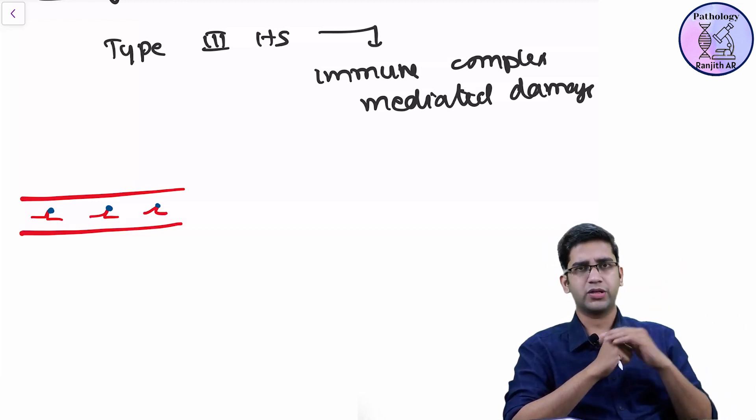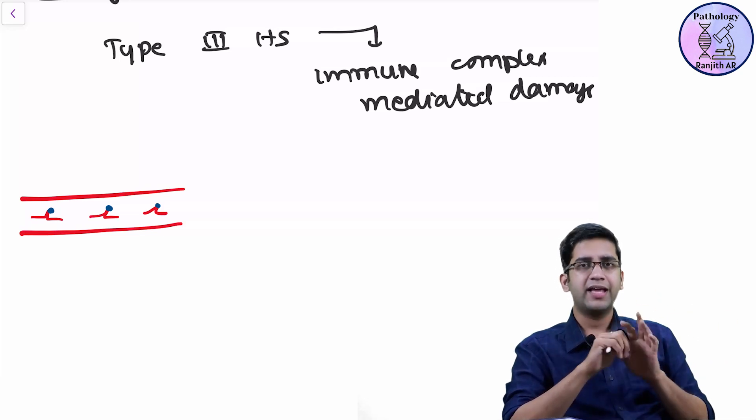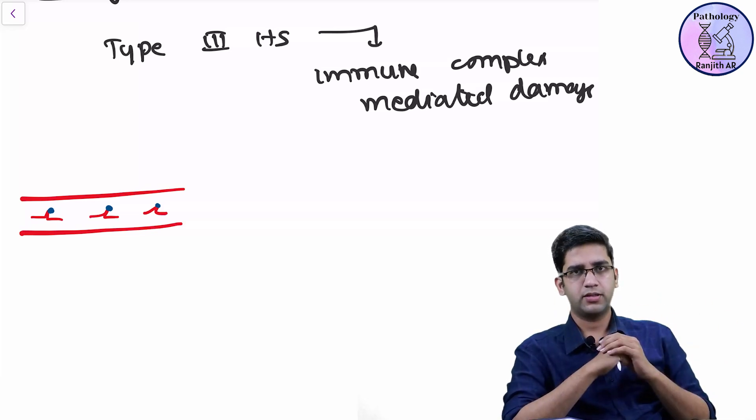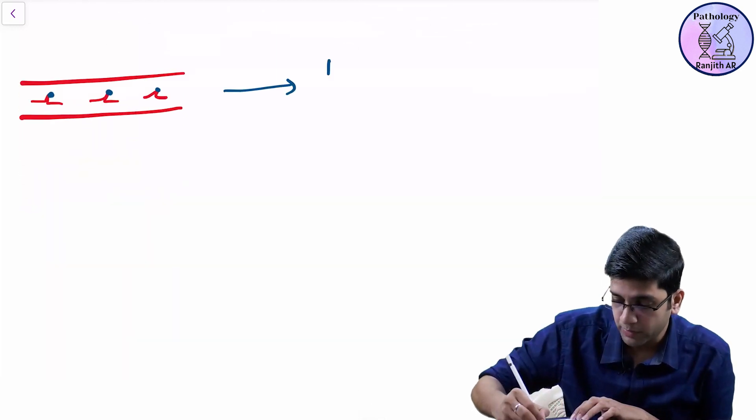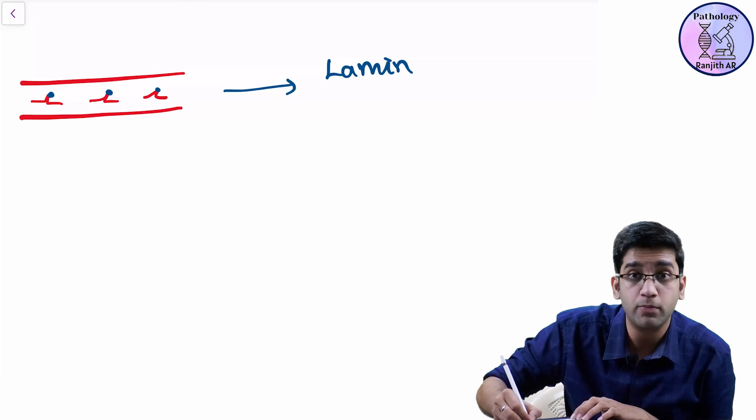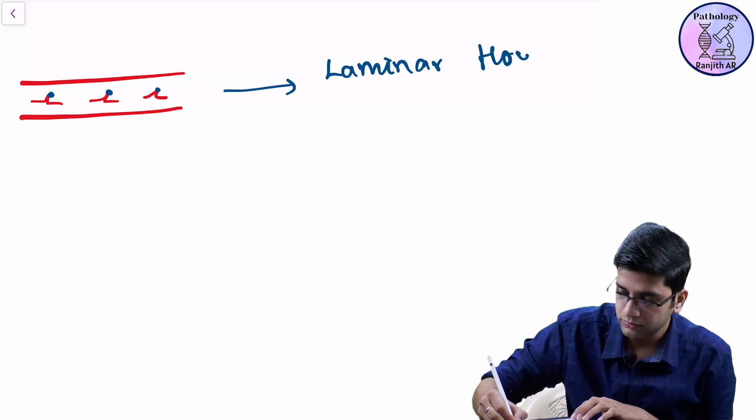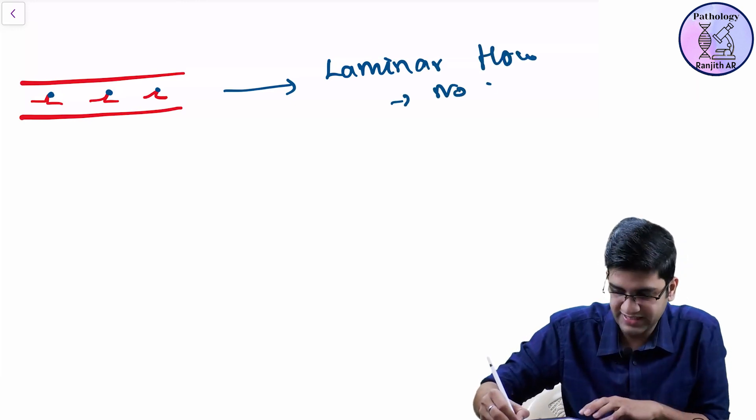The main problem is vasculitis, except for a few manifestations. So whenever my blood flow is slow, the immune complex, normally I have a laminar flow, no problem at all.